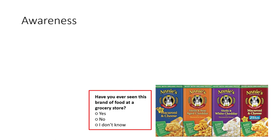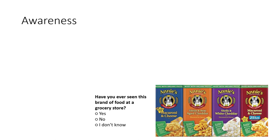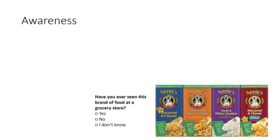Finally, we see an example of a recognition measure: have you ever seen this brand of food at a grocery store? Here we're not providing any aid — we are literally providing the individual the exact stimuli and merely asking them: have you seen this thing before? In practice, sometimes these recognition measures are also called aided recall measures because there is an aid present. However, it's useful to keep in mind that an aid is where you're helping someone along, whereas in a recognition measure we are literally providing someone the exact stimuli and merely asking if they have seen that thing before.